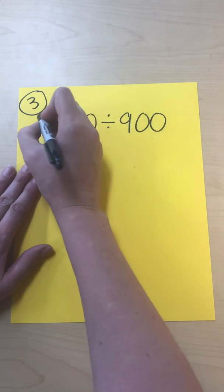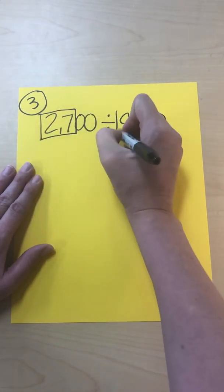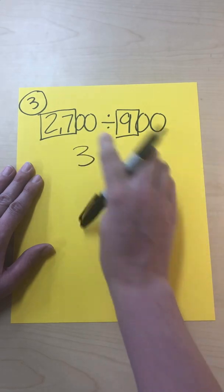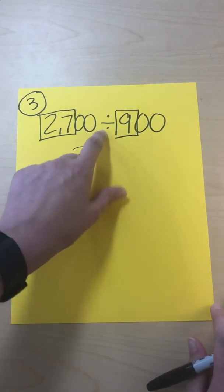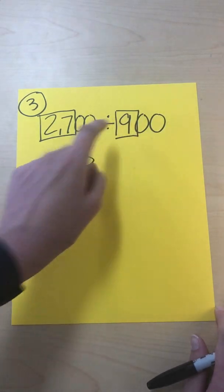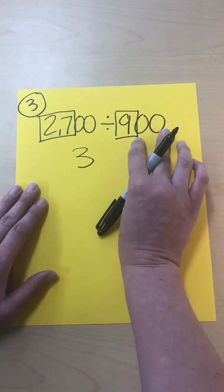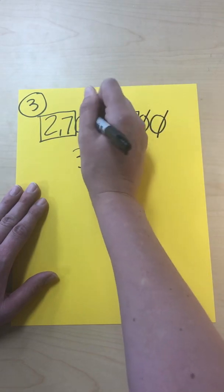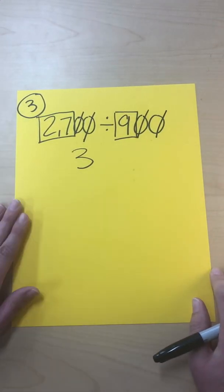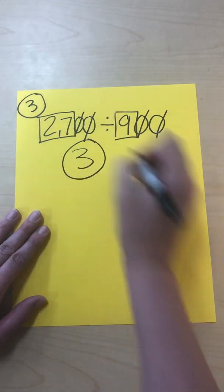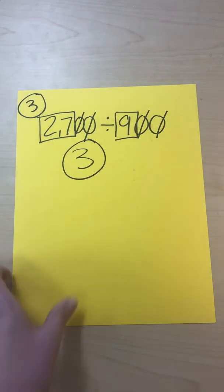On this one, we're still going to do 27 divided by 9, which is 3. And remember, you can't just drop down all the zeros because we're dividing now. So we need to divide out some of these zeros from each other. There's two zeros over here, two zeros over here. So I'm going to cross off these two. They kind of cancel each other out. And then I don't have any zeros to drop down. So my answer is just three.